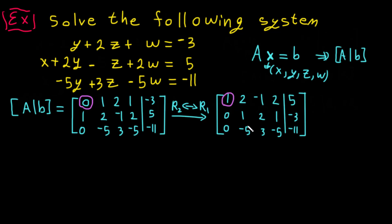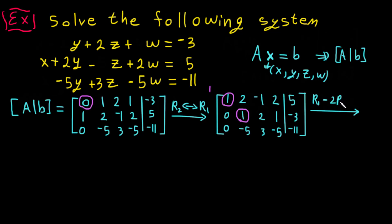Now we have a leading 1 here. We need to make the next leading 1 by walking down and right. The entries in the leading column must be zero above and below. So we need to make the entry above zero. Row 2 minus 2 times row 1 should give zero. So we compute: row 1 minus 2 times row 2 goes to row 1.